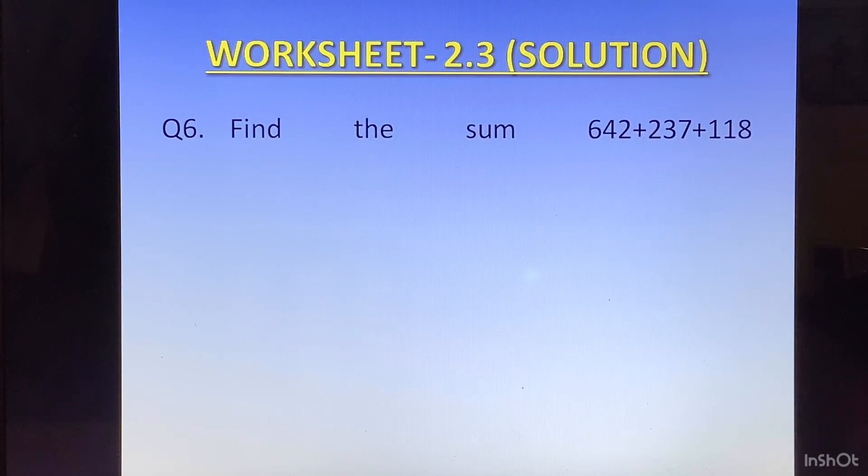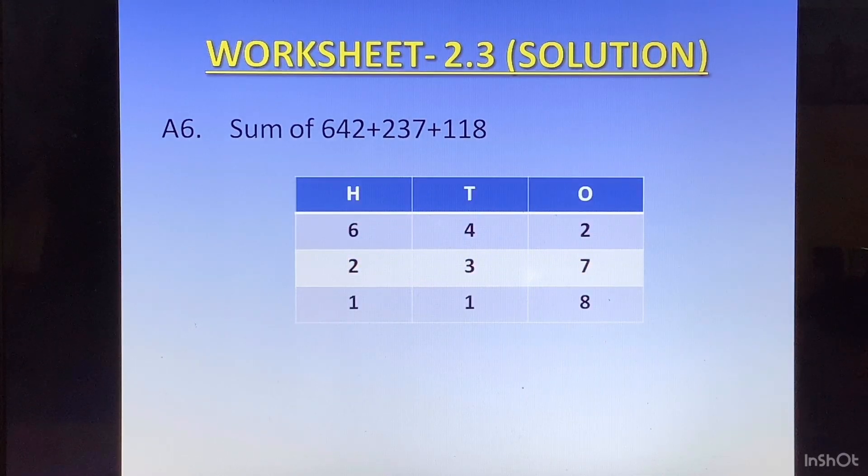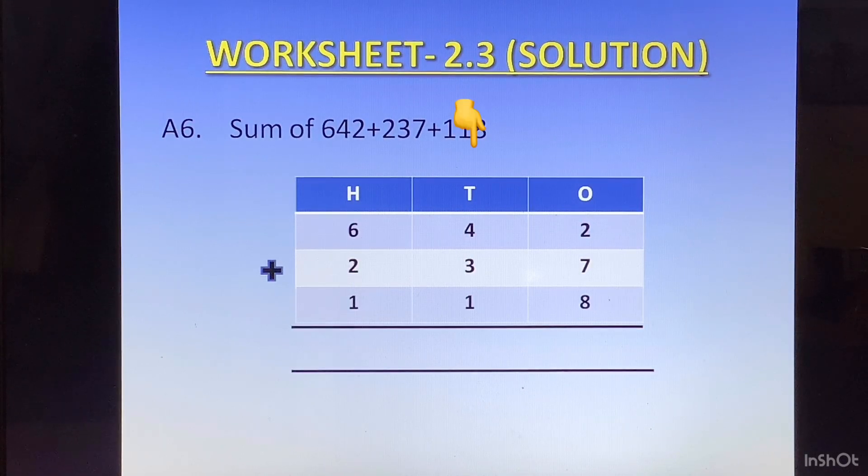Question 6. Find the sum of 642 plus 237 plus 118. We will write them one below the other and start solving the sum from the ones place. In the ones column we have 2 plus 7 is 9. 9 plus 8 is 17. 1 at the top of tens column and 7 at the bottom of ones column.